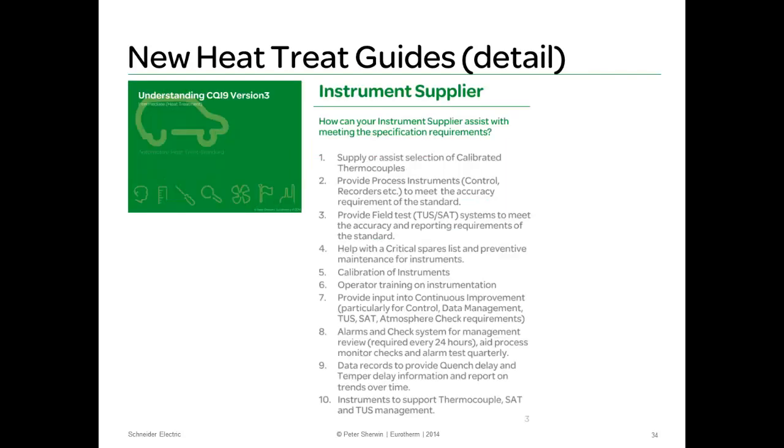Just a quick sneak preview of some of the information. This is the list in CQI 9 version 3. And these are the areas as an instrument supplier that we can help out with. Just quickly go through this list. So, we can supply or assist the selection of calibrated thermocouples. Obviously, we can provide process instruments to meet the accuracy requirement of the standard. As well as field test systems and instruments. Help with critical spares list. Preventive maintenance for instrumentation. The calibration of those instruments. And also, operator training.